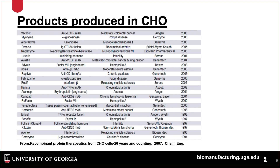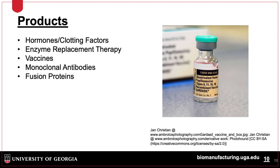CHO cell lines are the most commonly used in biomanufacturing operations. As shown on the table here, there are a number of different products made, including antibody drugs to treat cancer and arthritis, as well as drugs used to treat infertility, hemophilia, and certain diseases. There are a wide range of products produced, including hormones, clotting factors, enzymes, vaccines, antibodies, and other proteins.